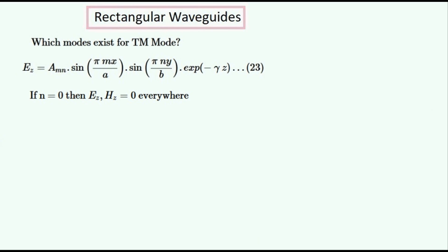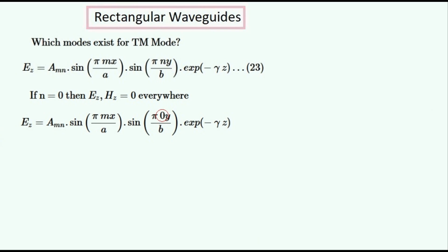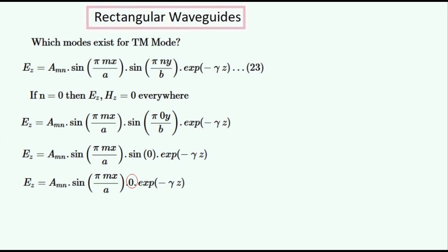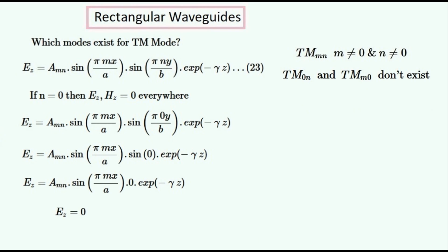Similarly EZ will be zero when N is equal to zero. After substituting N equals zero we get an equation containing a sine-zero term, giving us a zero multiplied by a group of expressions, so EZ is equal to zero everywhere in the waveguide. So E and H are zero everywhere in the waveguide and the mode with N equals zero cannot exist either. So the modes for TM for which N or M are zero can't exist. We write this as TM with M and N subscripts, specifying that neither of them can be zero. We can also write them out with a zero in the subscript saying that they don't exist.